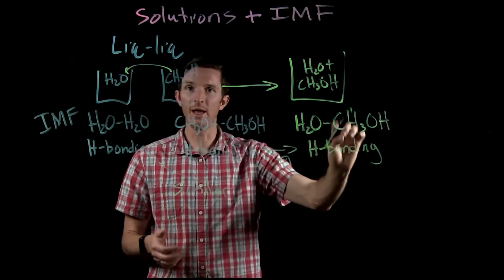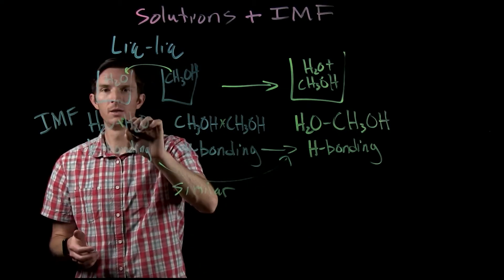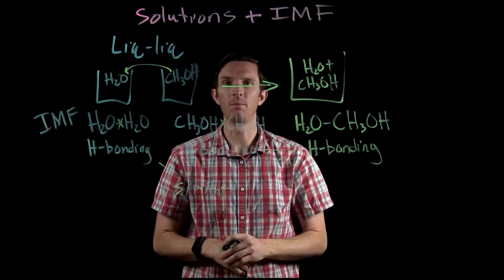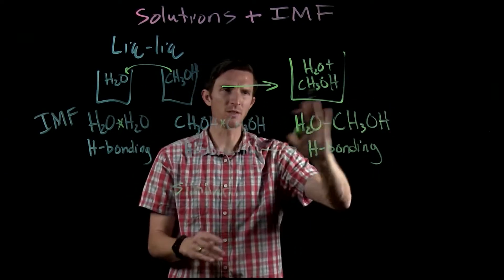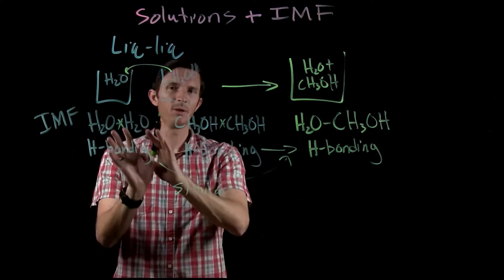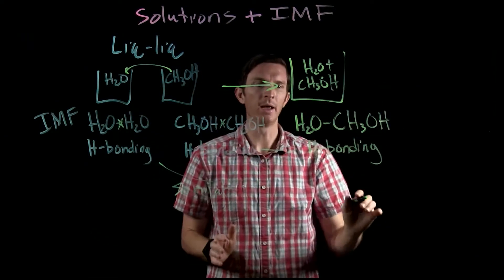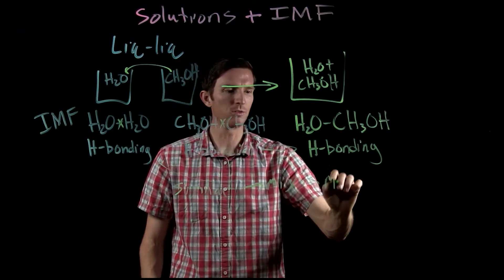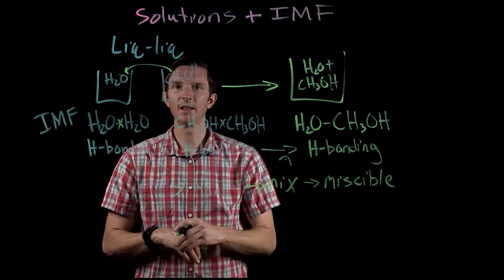It makes sense that these substances would mix together. When they mix, we're breaking attractions between water-water and methanol-methanol in order to form new attractions between water and methanol. If a process takes a lot of energy and we don't have strong enough attractions to compensate, the mixture won't form. But here, because we have similar strengths of attraction in our initial pure substances and in the final mixture, these two substances will mix — and we call those two substances miscible.